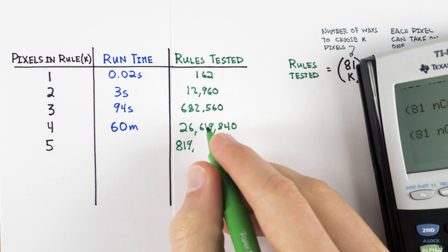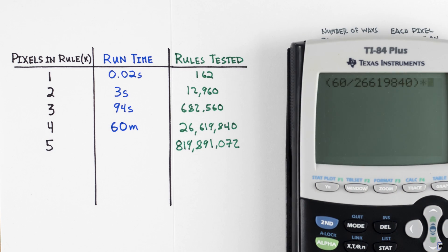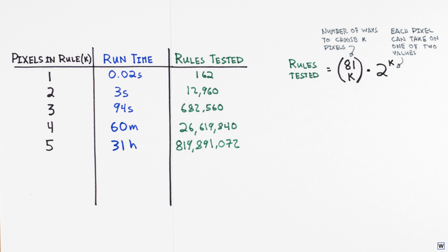Assuming it will take the same amount of time to test each rule, it would take roughly 31 hours to find the best 5 pixel rule, and 33 days to find the best 6 pixel rule. The exponential growth we're seeing here means that no matter how fast our computer or how efficient our code, we will never be able to find the best rules for even modest values of k in a reasonable amount of time.